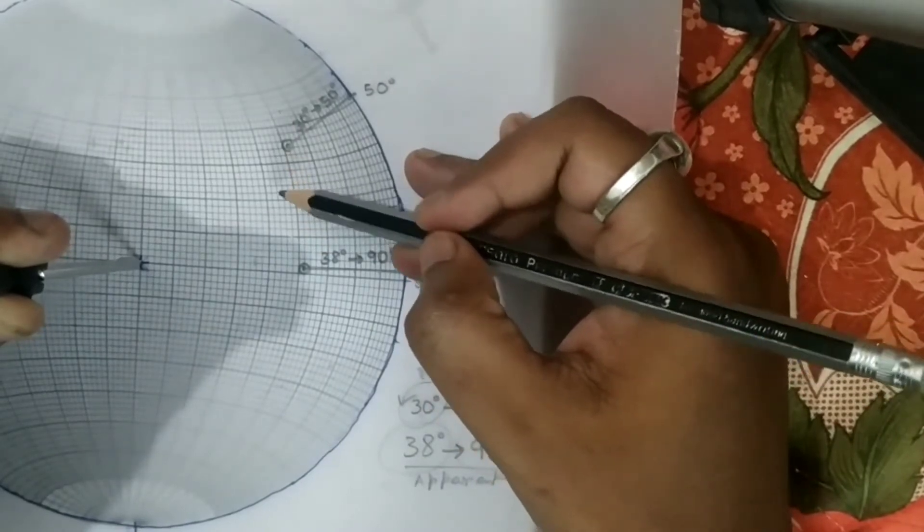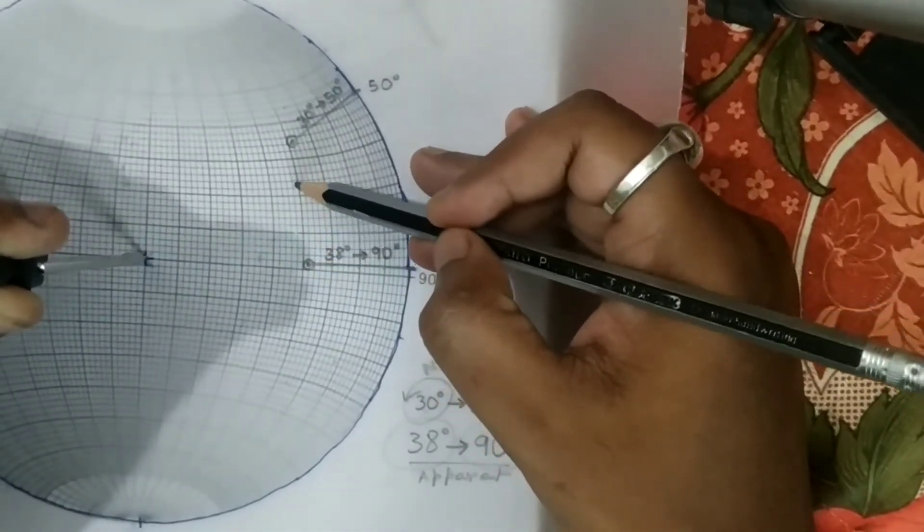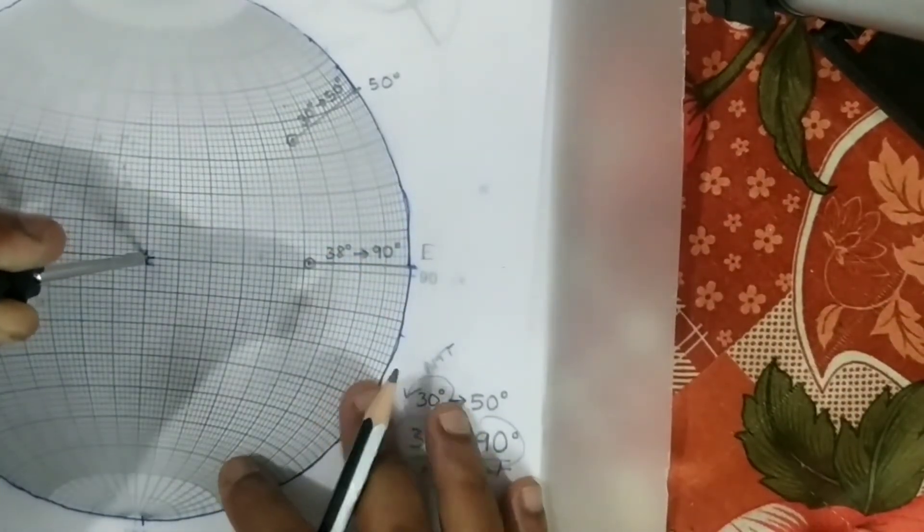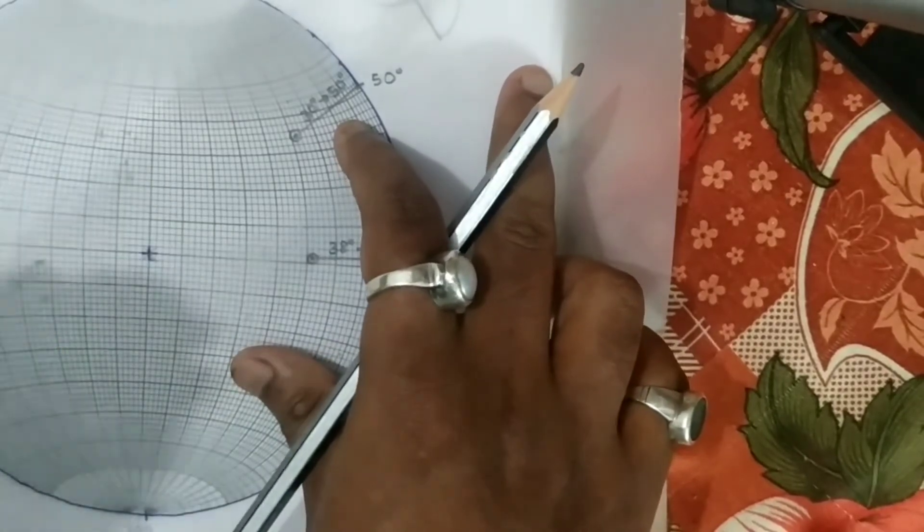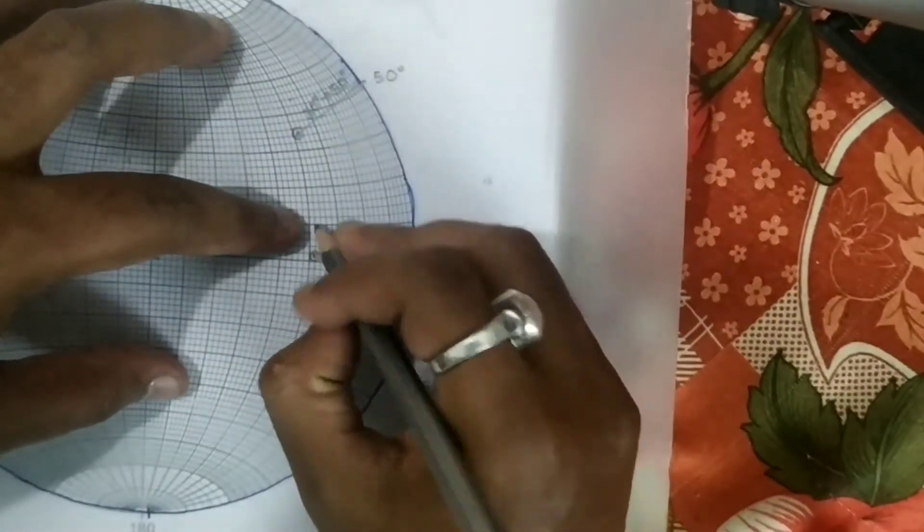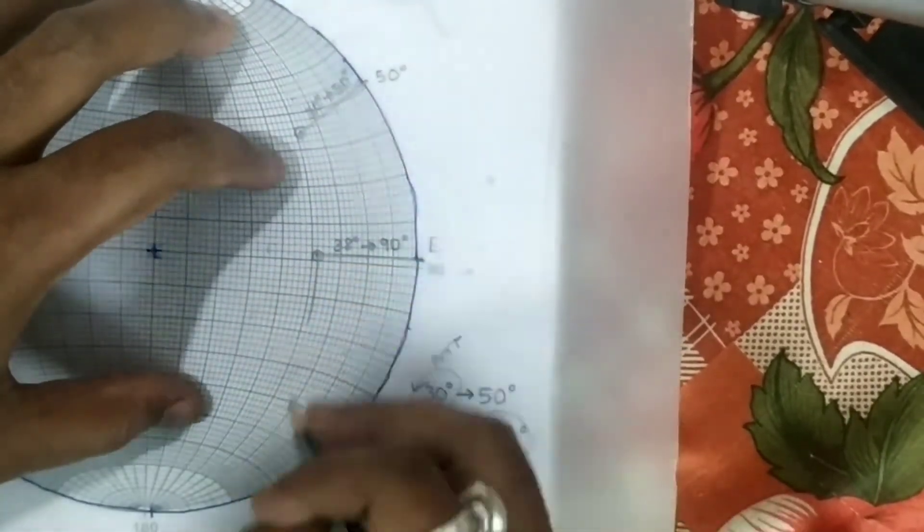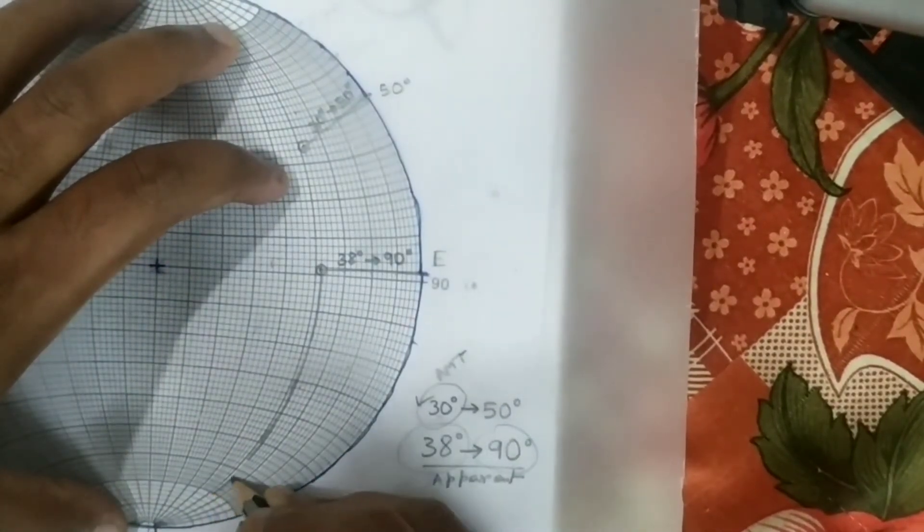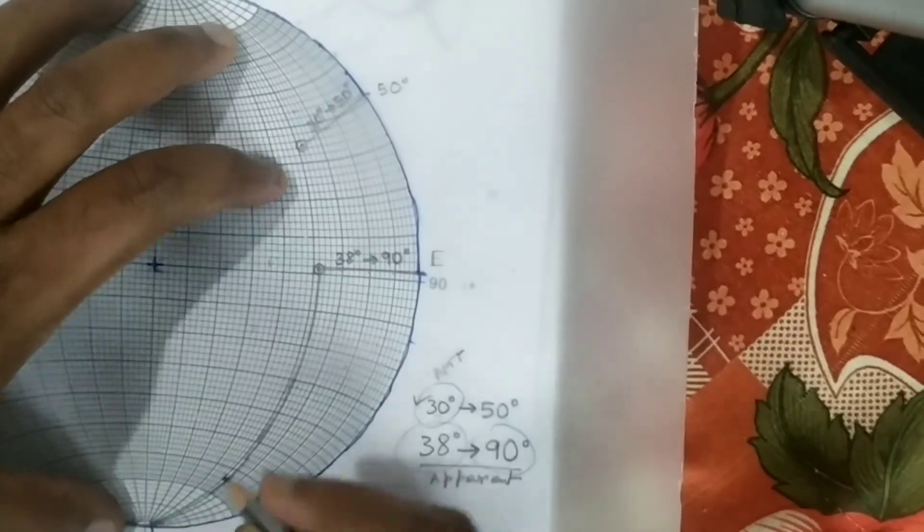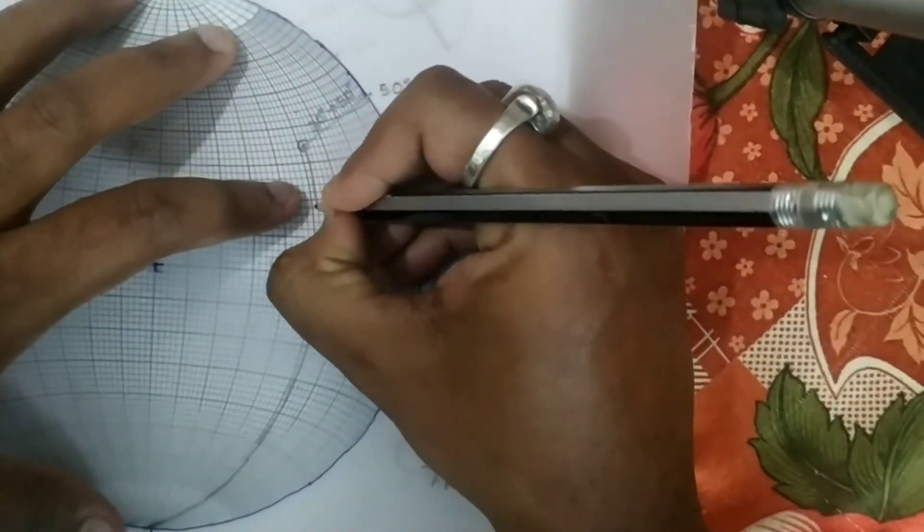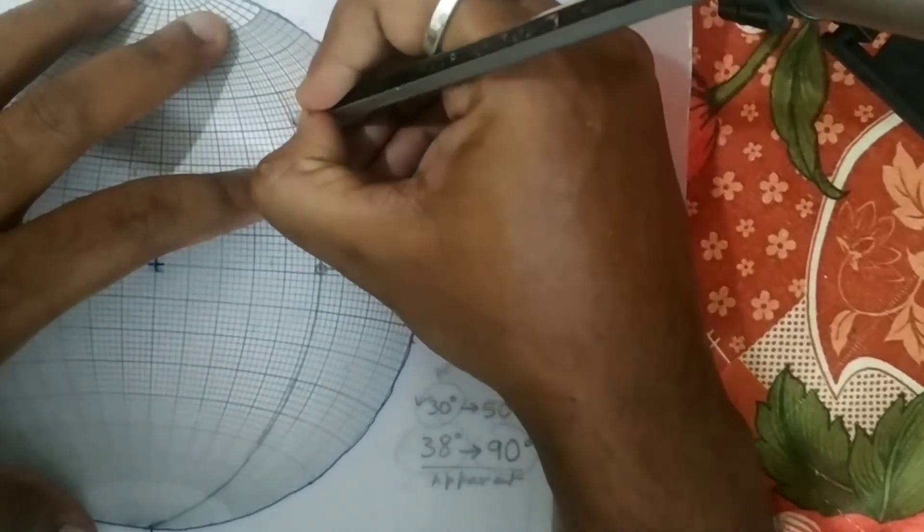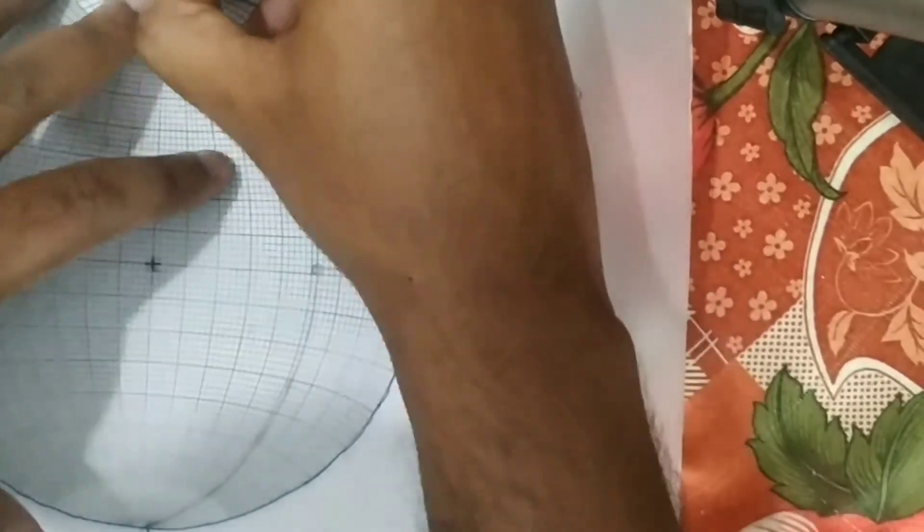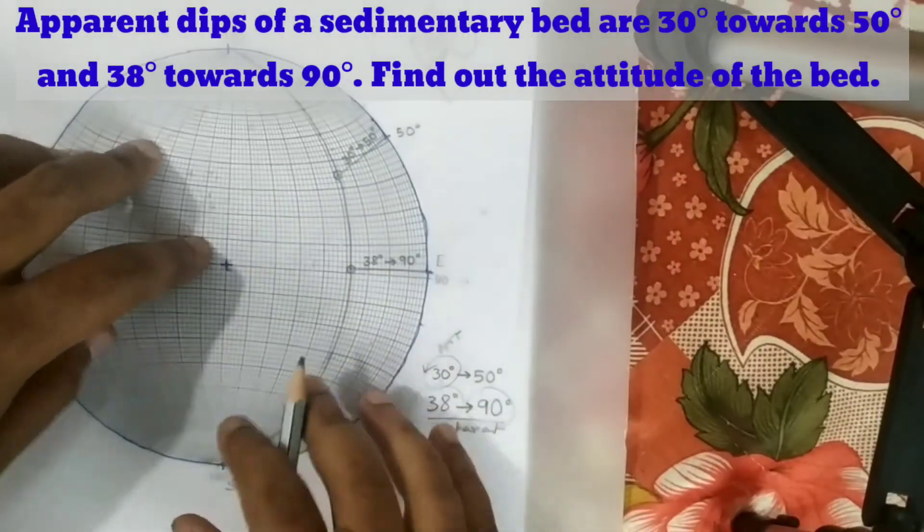The same great circle means a constant plane. So this is the great circle which actually represents the plane.